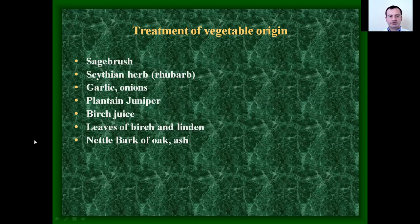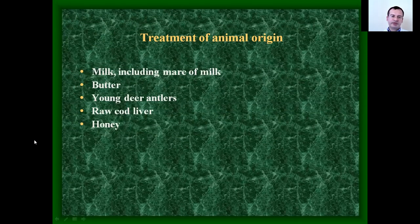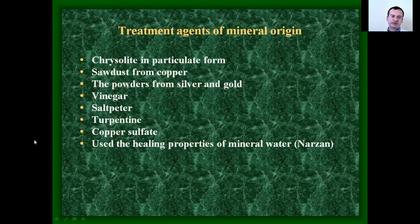Treatments of vegetable origin included sagebrush, Scythian herb, garlic, onion, plantain, juniper, birch juice, leaves of beech and linden, nettle, bark of oak and ash. Animal origin treatments included milk — including mare's milk — butter, young deer antlers, raw cod liver, and honey. Mineral origin treatments included preparations of copper, powder from silver and gold, vinegar, salt butter, turpentine, copper sulfate. They also used the healing properties of mineral water, for example narzan.